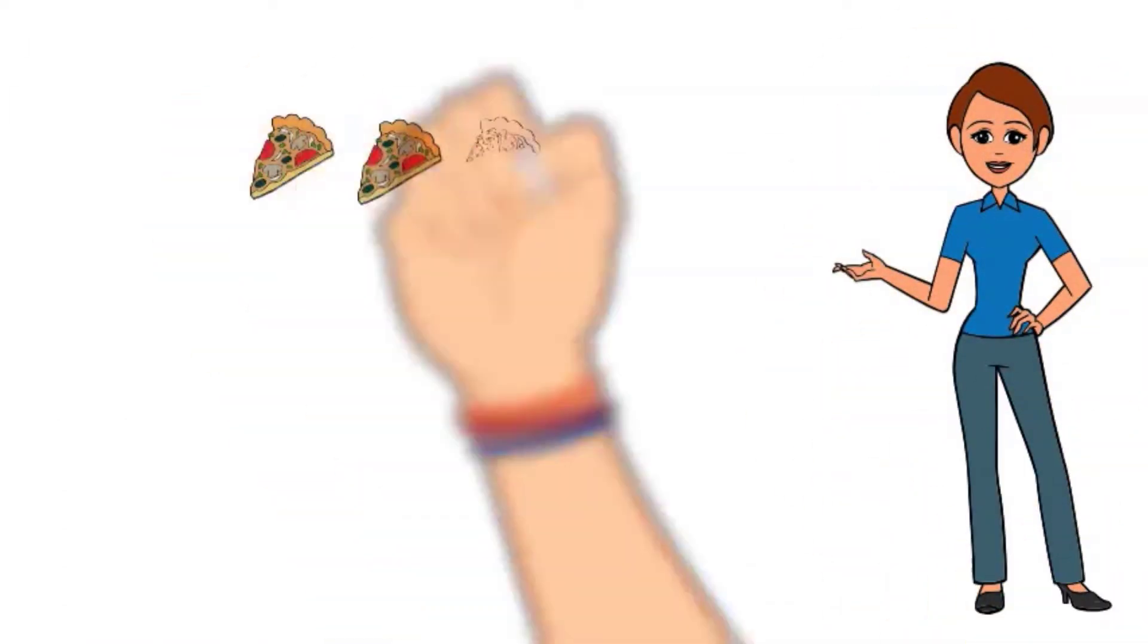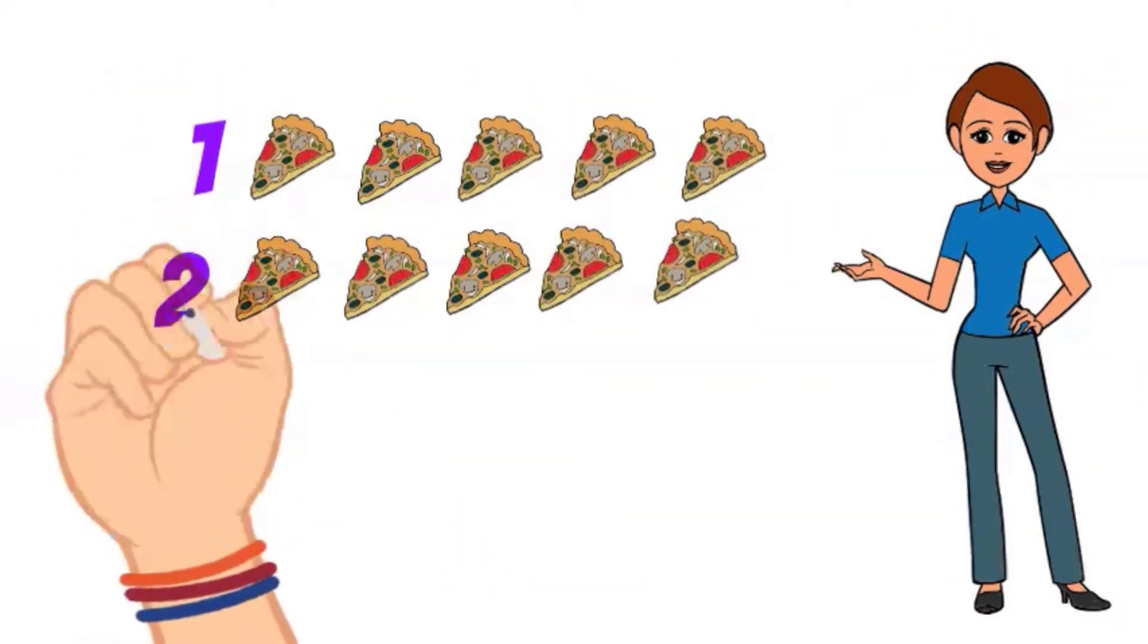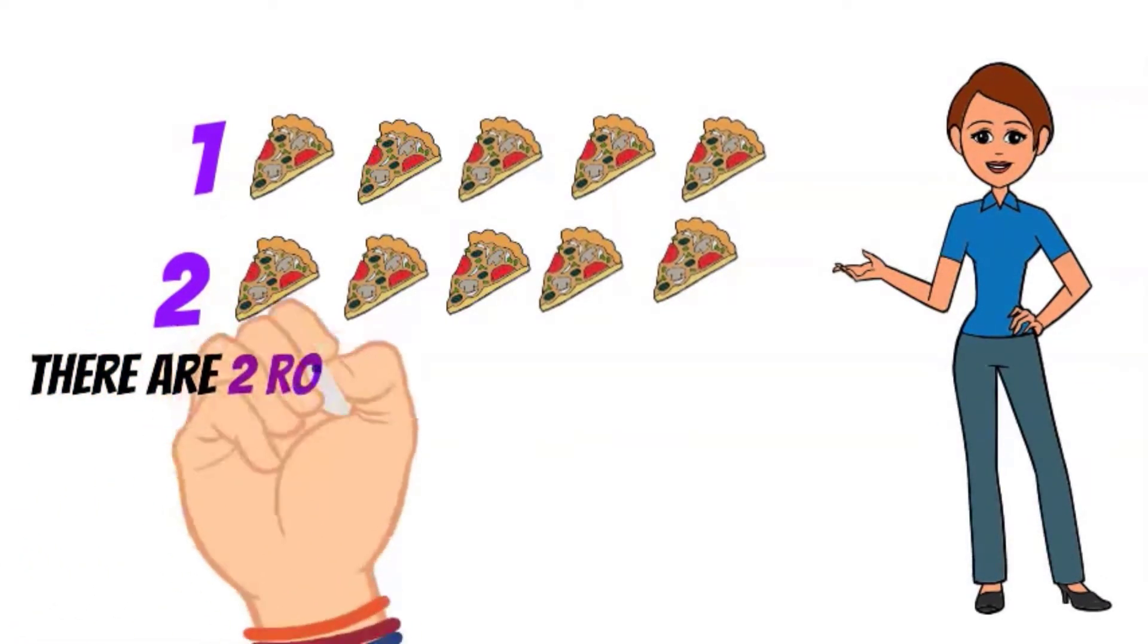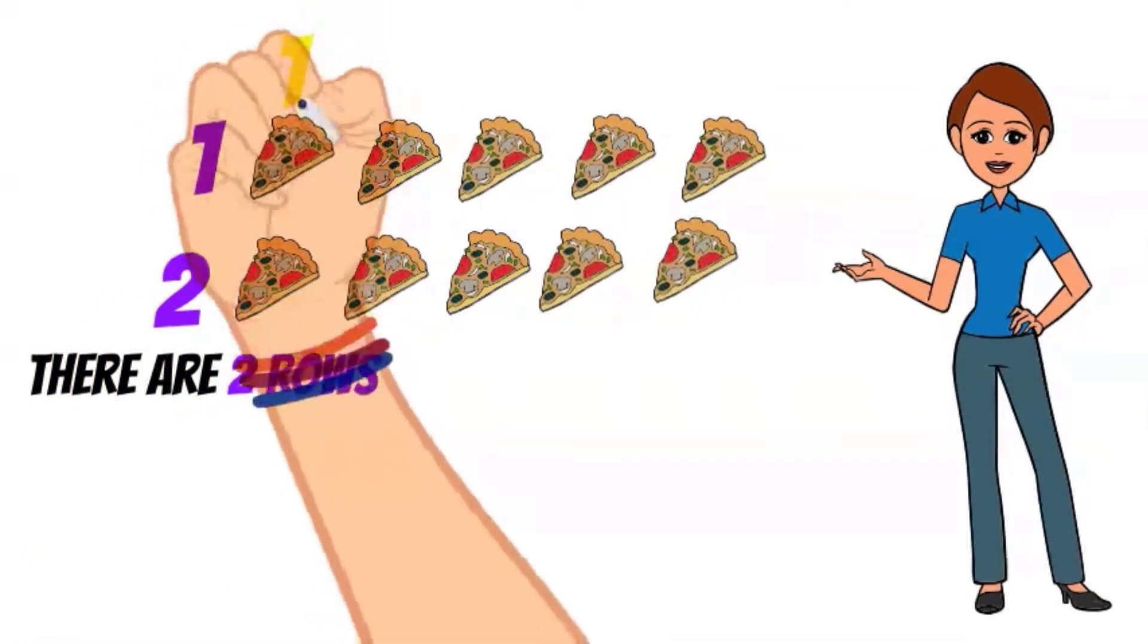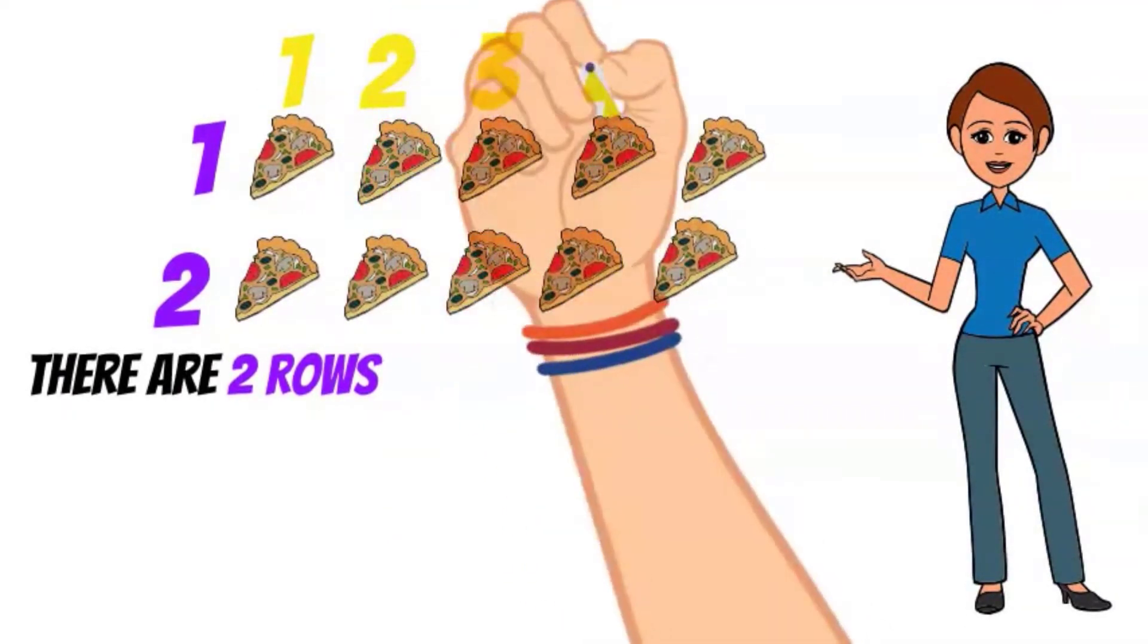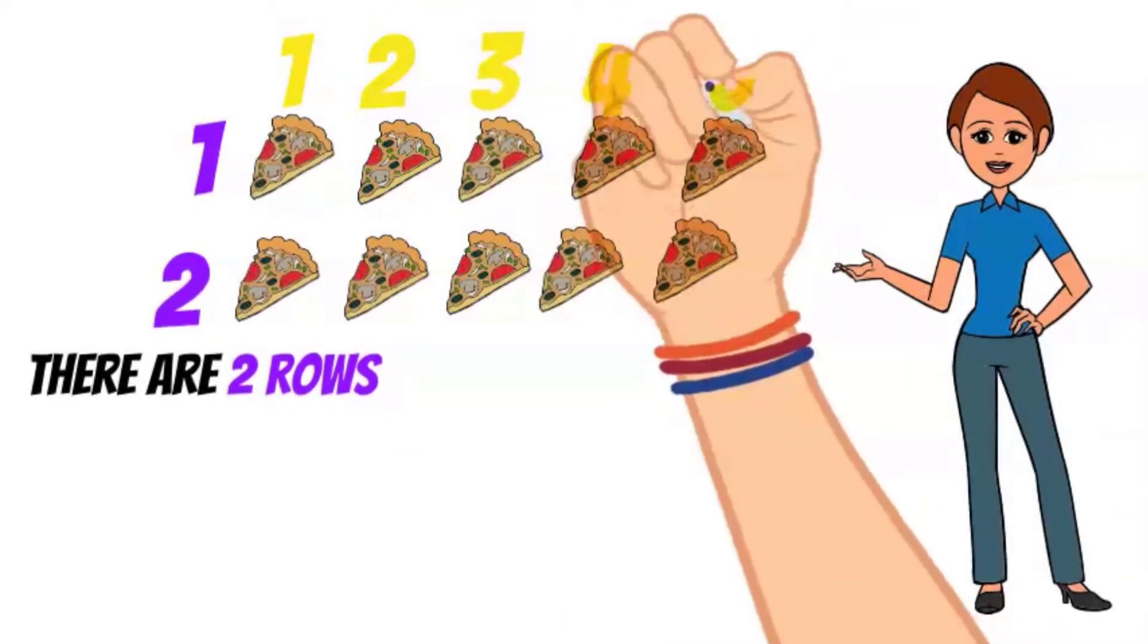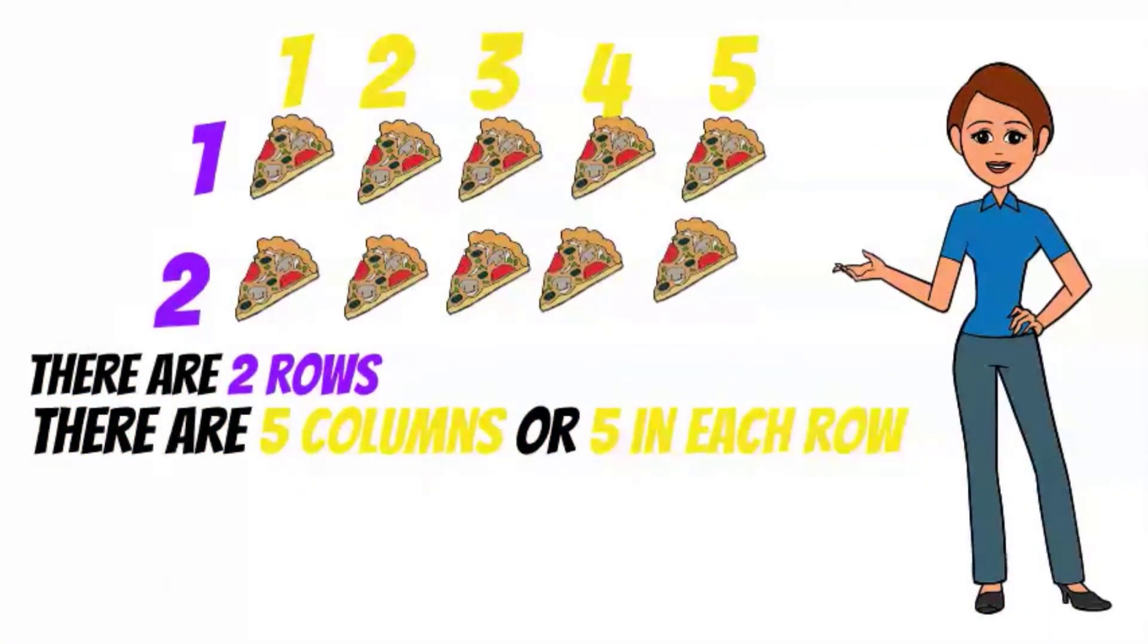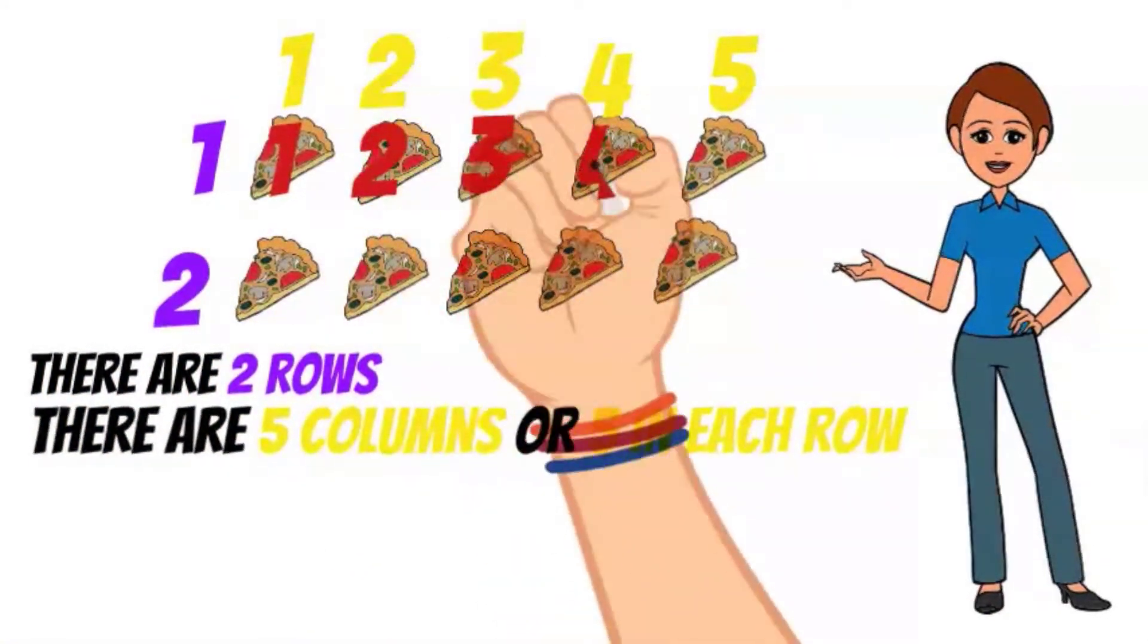Mmm, yummy pizza. There's one, two rows of pizzas. One, two, three, four, five. There are five columns or five in each row.